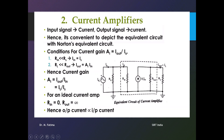Here, Is is the source current, and Rs is the source resistance, connected in parallel with this current source. Rin represents the input resistance. Ai·Iin represents the dependent current source. The output resistance Ro is connected in parallel with this current source, and the load resistance RL is also connected here.